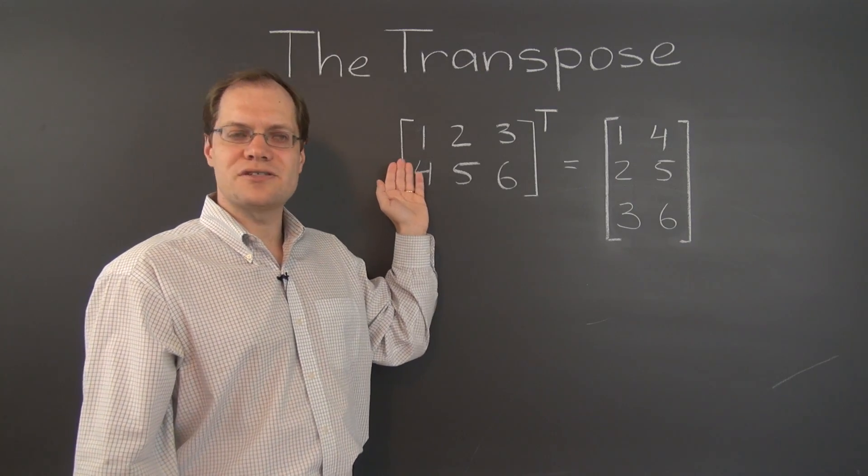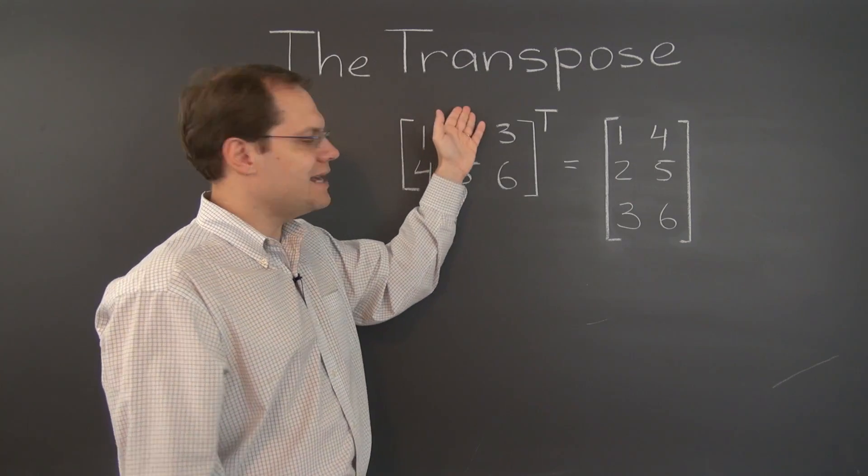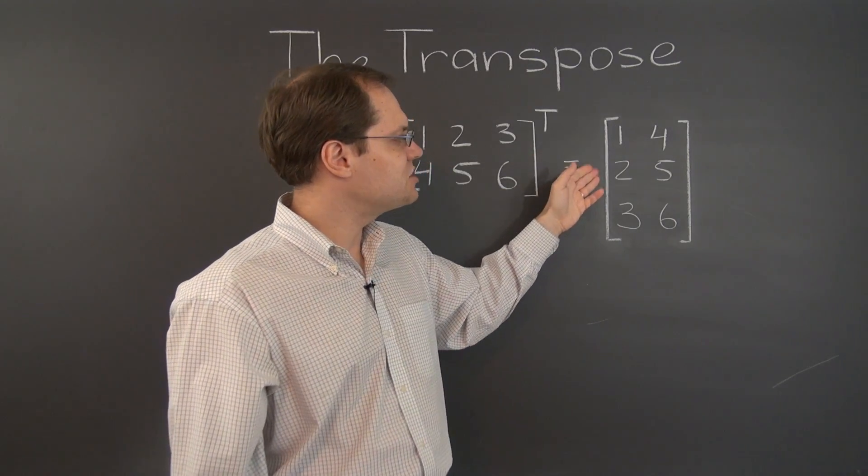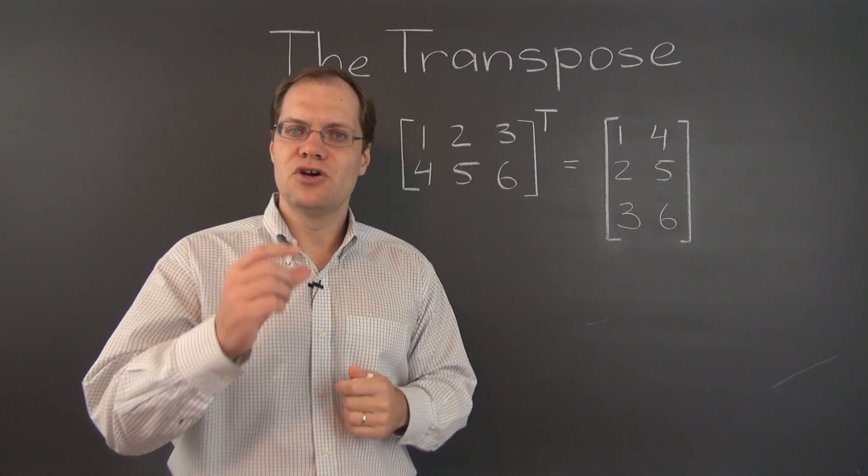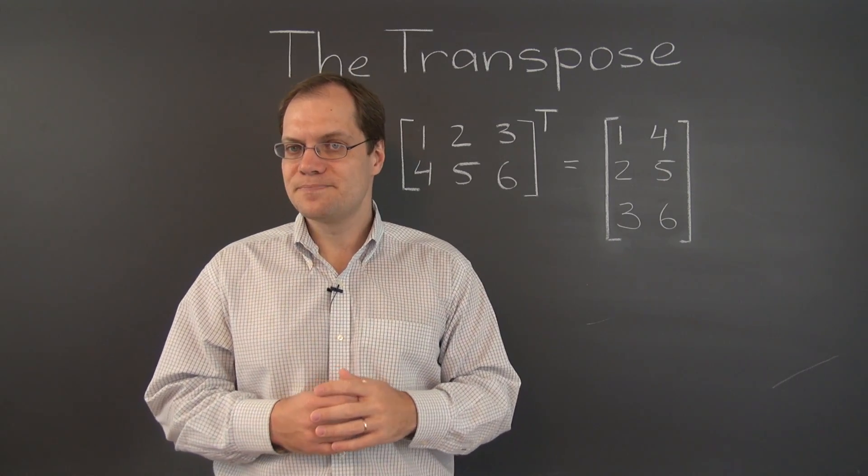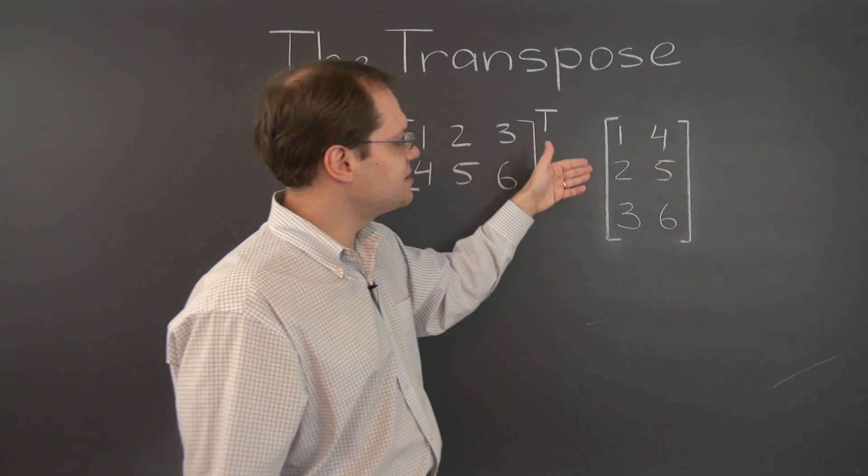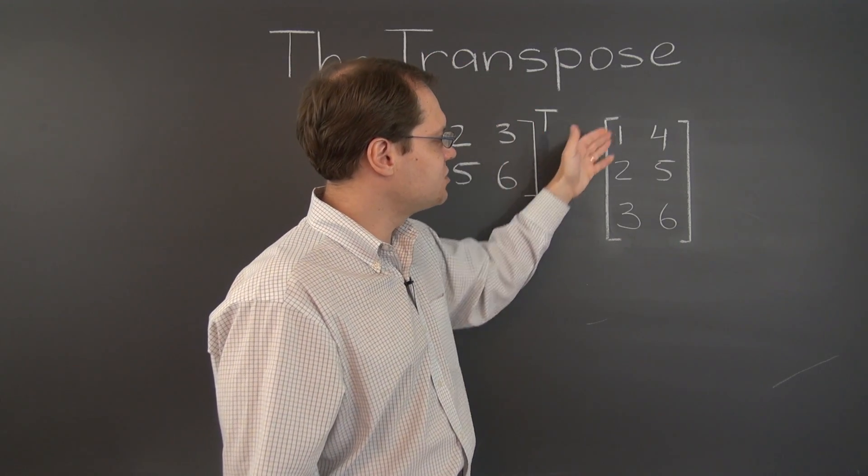So if the original matrix was M by N, then the new matrix, its transpose, has dimensions N by M. So the transpose reverses the dimensions. In particular, this matrix was 2 by 3, so the resulting matrix, its transpose, is 3 by 2.